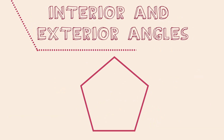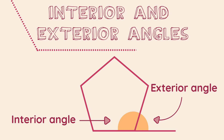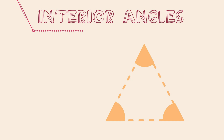Let's look at this polygon. Here we have an interior angle, which is inside the shape, and here we have an exterior angle, which is outside the shape. The interior and exterior angle will form a straight line. Here we have a triangle — it is a very important shape when calculating the sum of the interior angles of a polygon. The most important thing to note is that the interior angles of a triangle will always add up to 180 degrees.